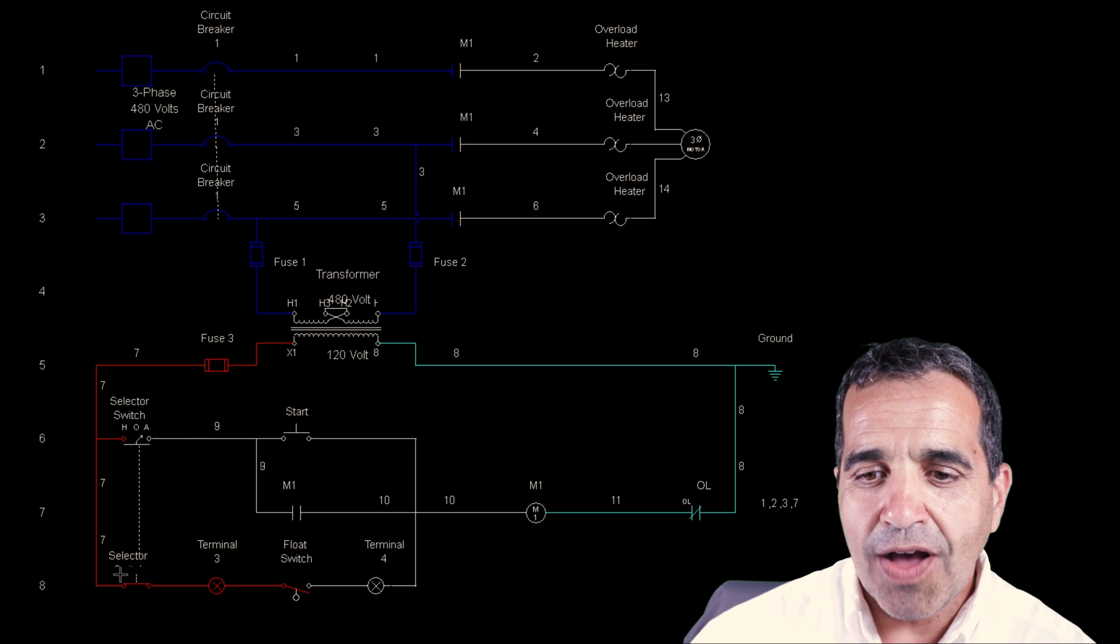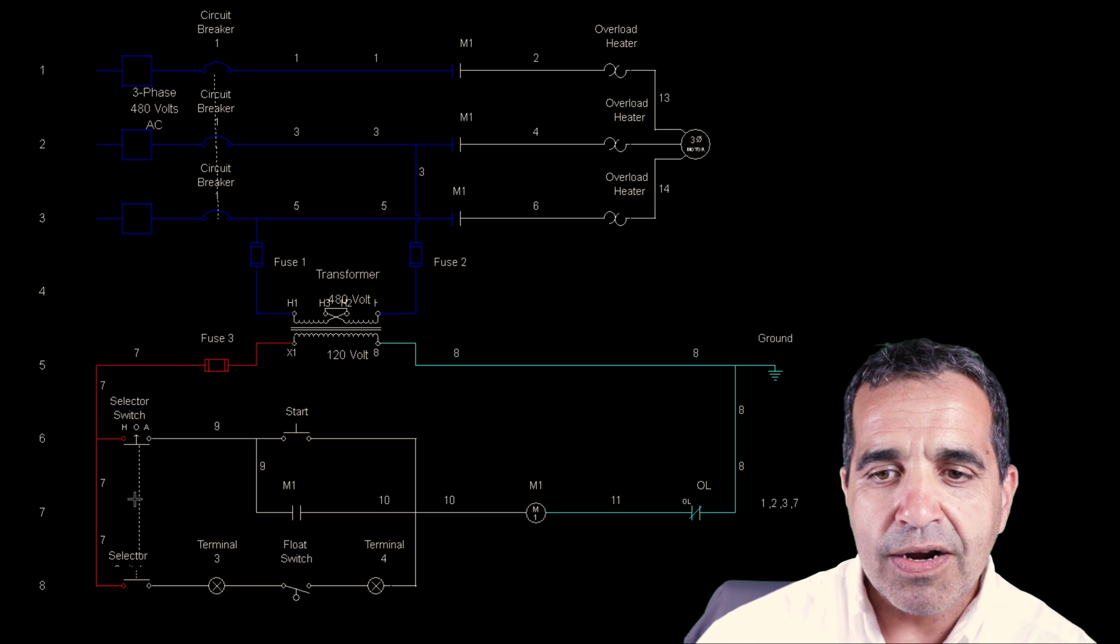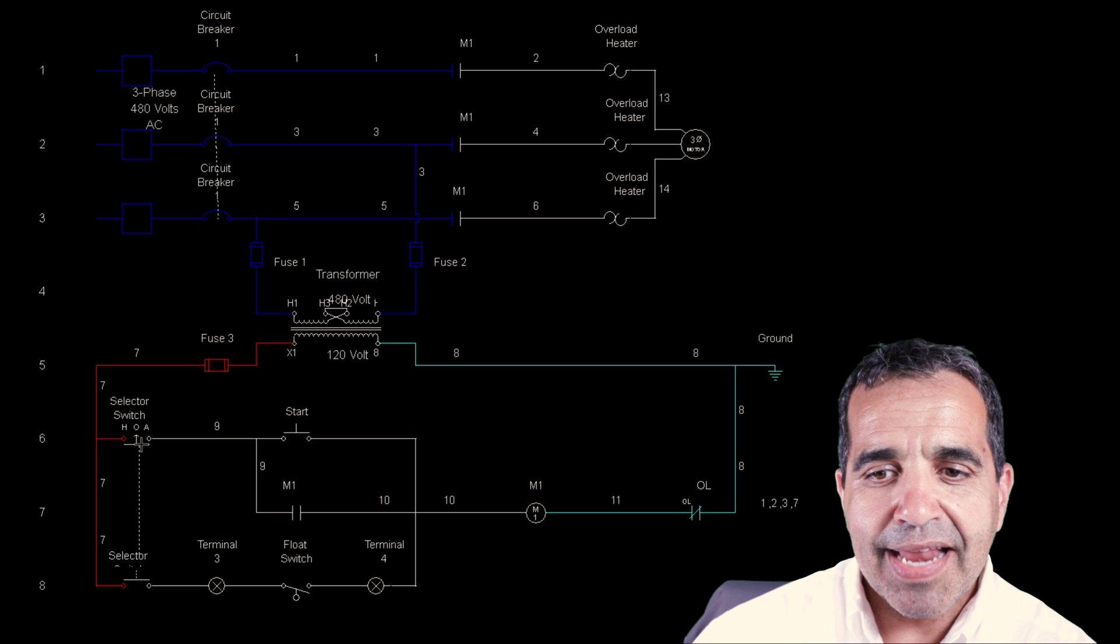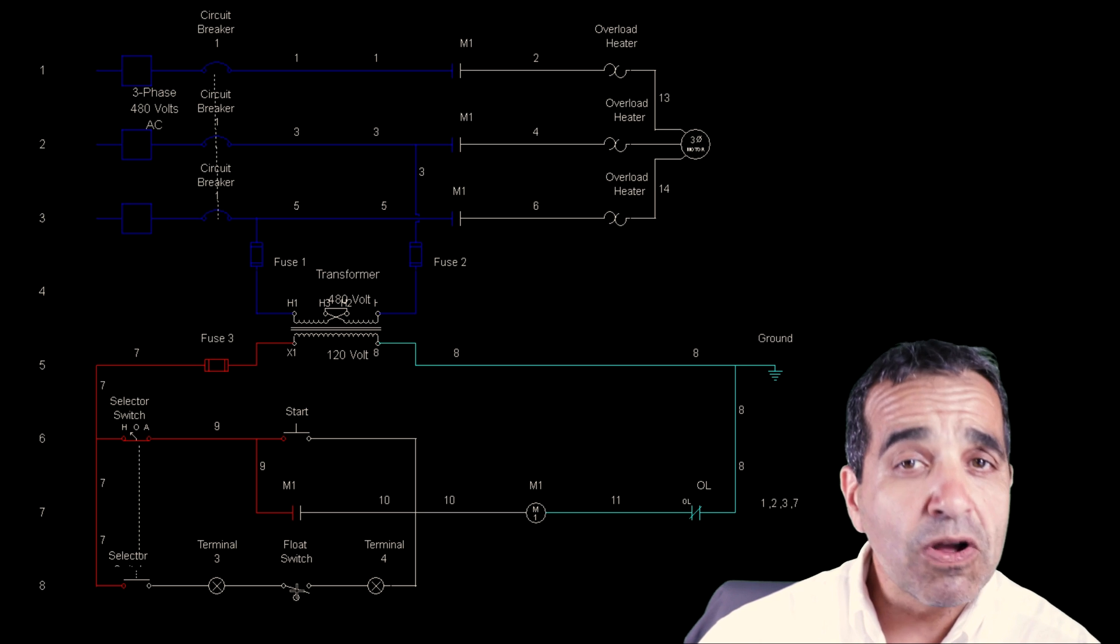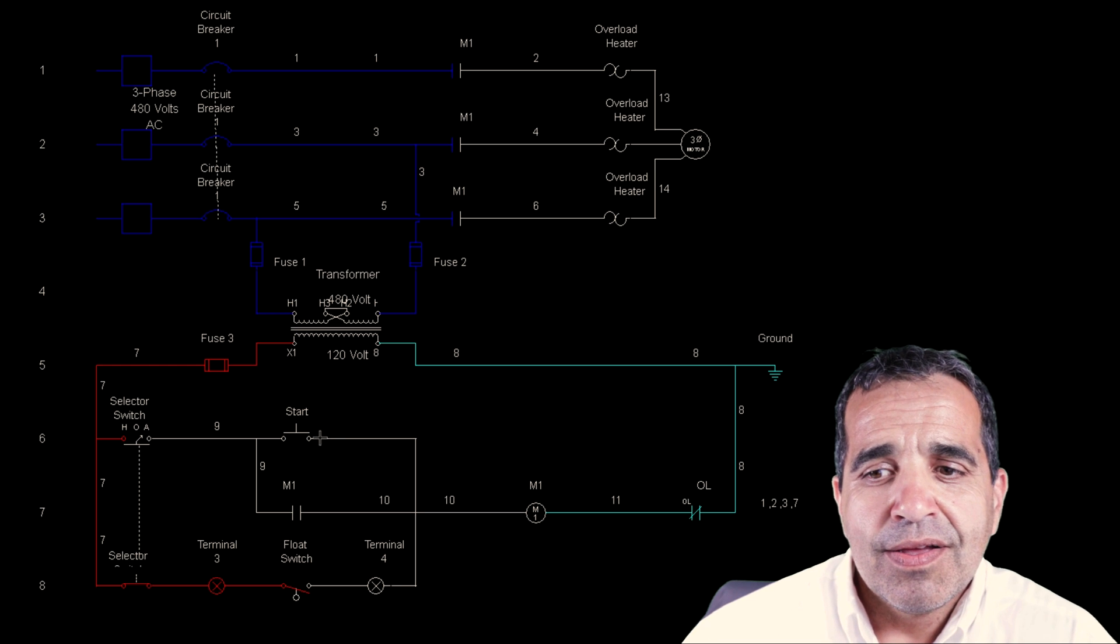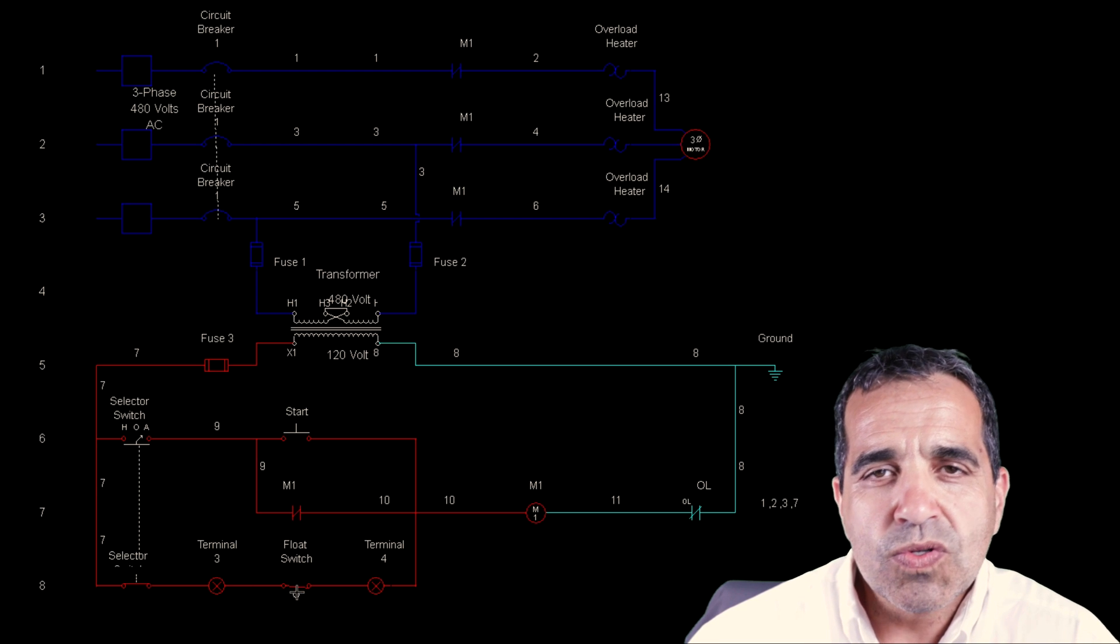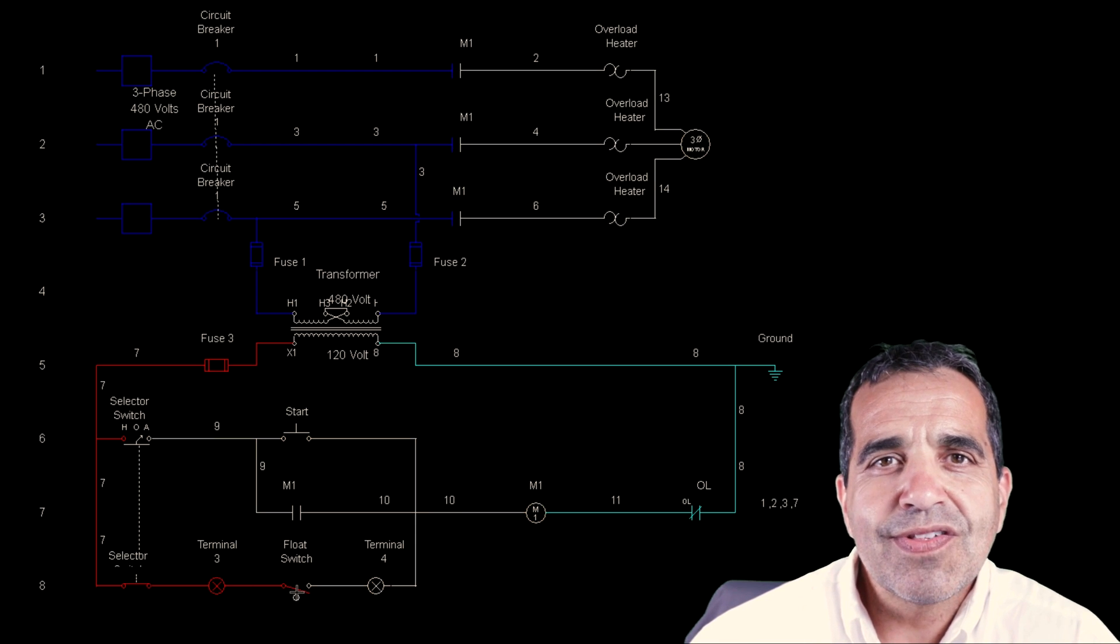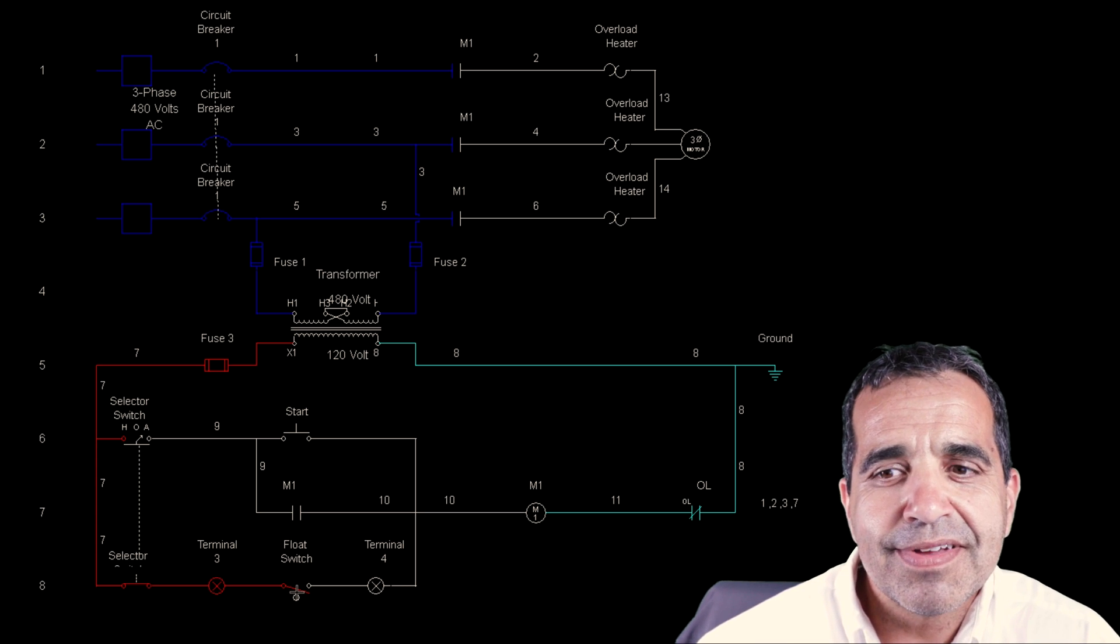So you have hand, off, and auto. If it's off, nothing will work. I can come hit start. The float can rise, the float can fall. Nothing will happen because nothing is getting by our hand-off-auto switch. Again in hand mode, the float can rise and fall. It won't operate anything because there's no power going to the float switch when it's in hand mode. But if I switch it to auto mode, the start button can come on and off. Nothing will happen because there's no power feeding the start button. Only the float will turn the system on and will turn the system off. If this was our timer, only the timer would turn the system on and would turn the system off. There's a pump panel folks.